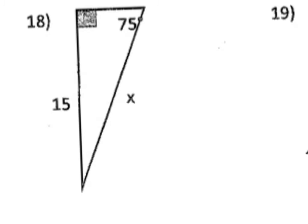Let's start at the given angle measure, which is here, and we have a given hypotenuse and an opposite again. So I know I have an O and an H.